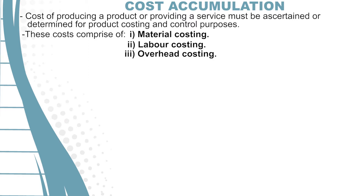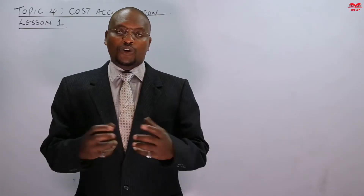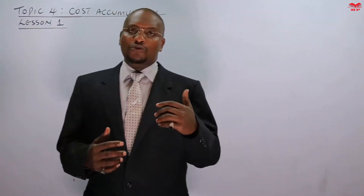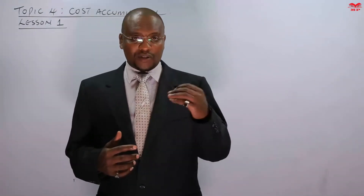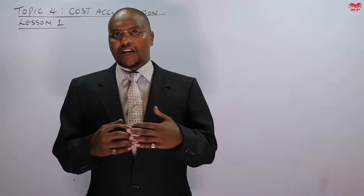When it comes to material costing, this entails the study and analysis of purchasing procedures, stock control, valuation of stocks, and allocation of material cost to products. It's a whole process right from when you start the process of buying materials to when you are going to allocate these materials to the products.